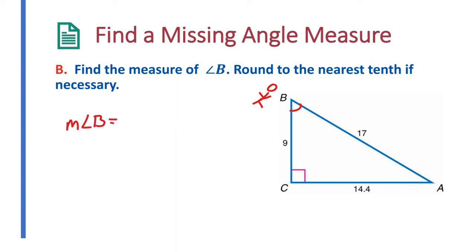So the measure of angle B is equal to your tangent inverse. And from that angle, we know that this is your opposite, this is your adjacent, and this is your hypotenuse. We need opposite over adjacent. So we're going to put in 14.4 over your adjacent of 9 here. And we're going to simplify that.